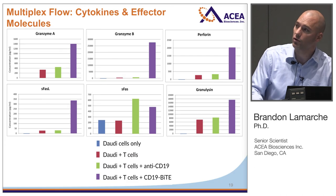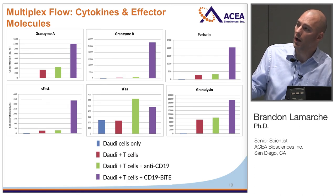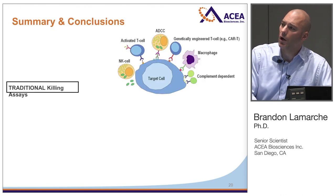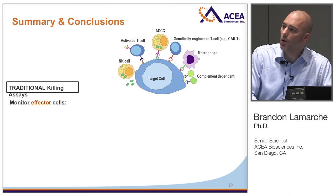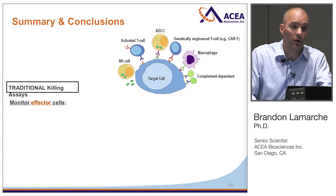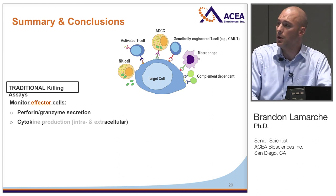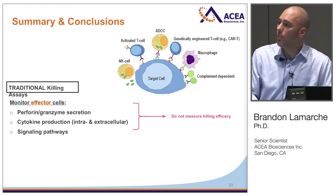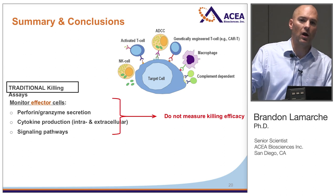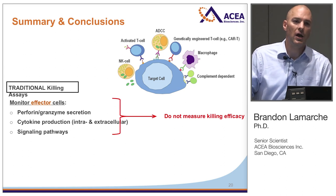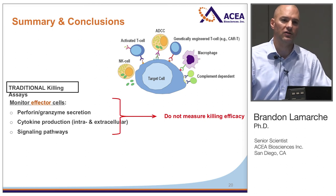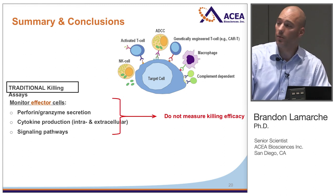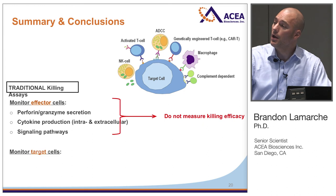The same is also true for effector molecule production as a whole. In summary for this part of the talk: in a traditional cell killing assay, you can monitor the effector cells themselves — looking at perforin or granzyme secretion, cytokine production, or signaling like phosphorylation pathways. But the problem is that these are surrogates; they're not in themselves measuring cell killing efficiency, and at the end of the day immunotherapy is really about developing the best, most specific and most efficient killers.